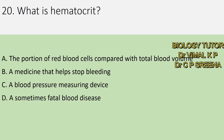What is hematocrit? A. The portion of red blood cells compared with total blood volume, B. A medicine that helps stop bleeding, C. A blood pressure measuring device, D. A sometimes fatal blood disease. Here answer is A — hematocrit is the portion of red blood cells compared with total blood volume.